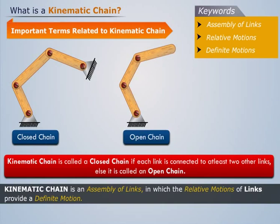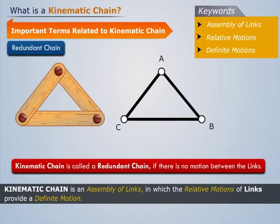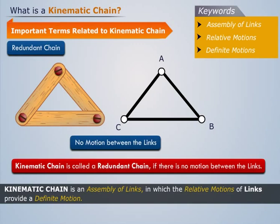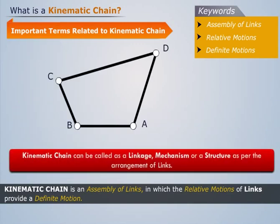A kinematic chain is called a redundant chain if there is no motion between the links. A kinematic chain can be called as a linkage, mechanism, or a structure as per the arrangement of links.